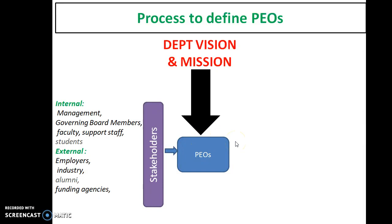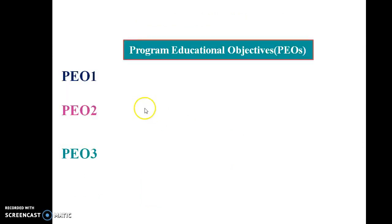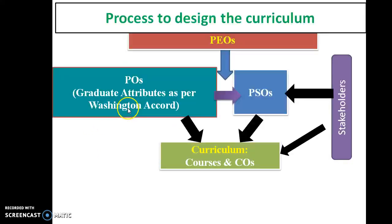We already discussed the PO statements PO1 to PO12, which have a family correlation with our department vision and mission. After defining the department vision, mission, and PEOs, the next step is to design the curriculum. Before that, we have to define the PSOs. To define the PSOs, we follow the same process, keeping in mind both the PO statements and the POs.